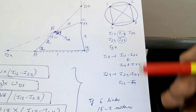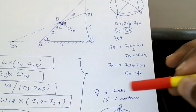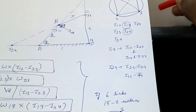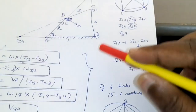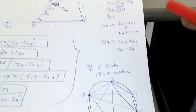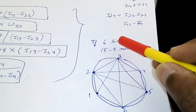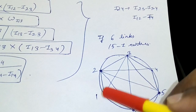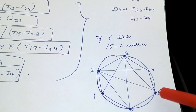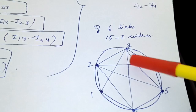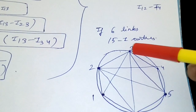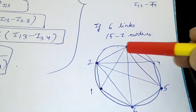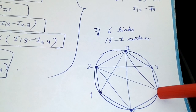This approach generalizes: for 5 links there are 10 I-centers (draw a pentagon), for 6 links there are 15 I-centers (draw a hexagon and join all vertices). For example, with 6 links, I13 can be found using I12–I23 and I16–I36, and I35 can be found using I34–I45 and I36–I56.